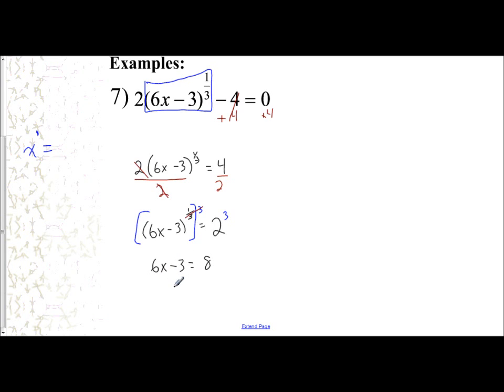And you're going to add 3 and get 6x equals 11, divided by 6, x equals 11 sixths. And as always, you have to make sure that you go through and you check your answer. And so what we do is we have twice the quantity 6x, so 6 times 11 sixths, minus 3 to the one-third power, minus 4 should equal 0.